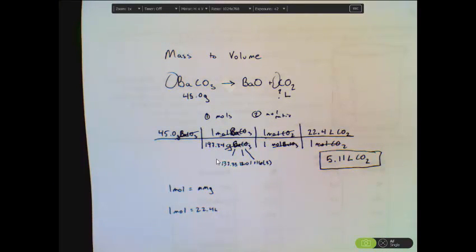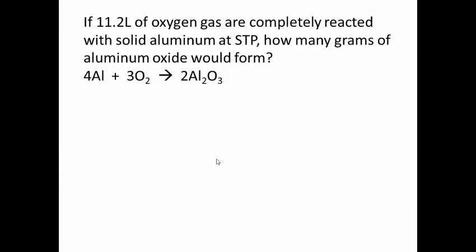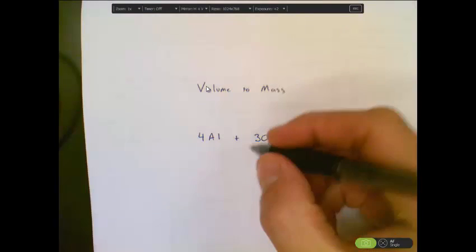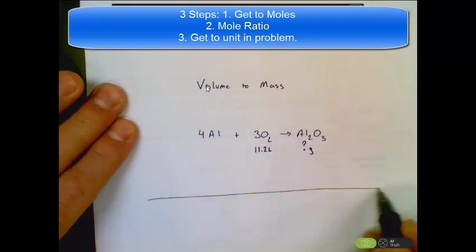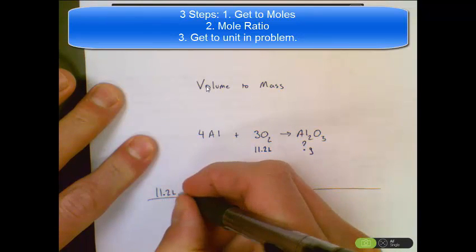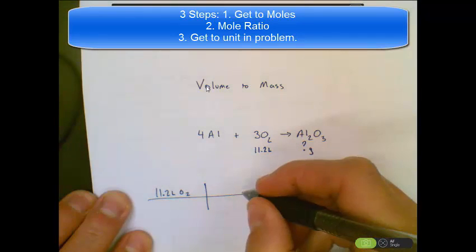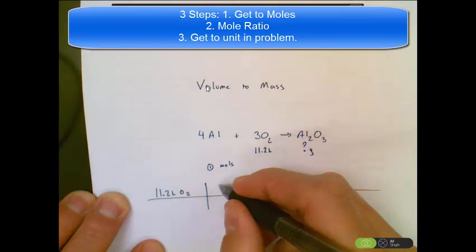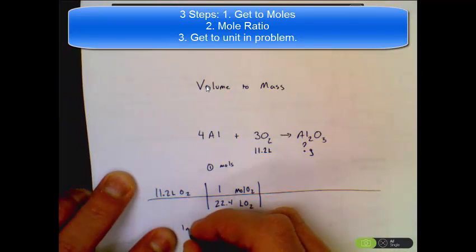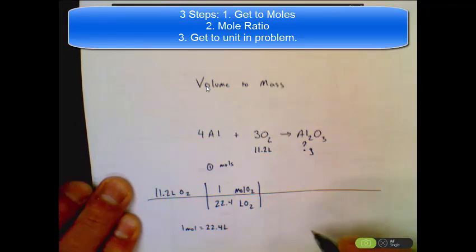You can also do a volume-to-mass problem. If 11.2 liters of oxygen are given, I'll write that underneath the oxygen in the balanced equation, and I want to solve for grams of aluminum oxide. I have 11.2 liters of O2 and I'm trying to find how many grams of aluminum oxide. Always start with what you know — taking 11.2 liters of O2, and going from liters to moles. One mole equals the molar mass in grams.